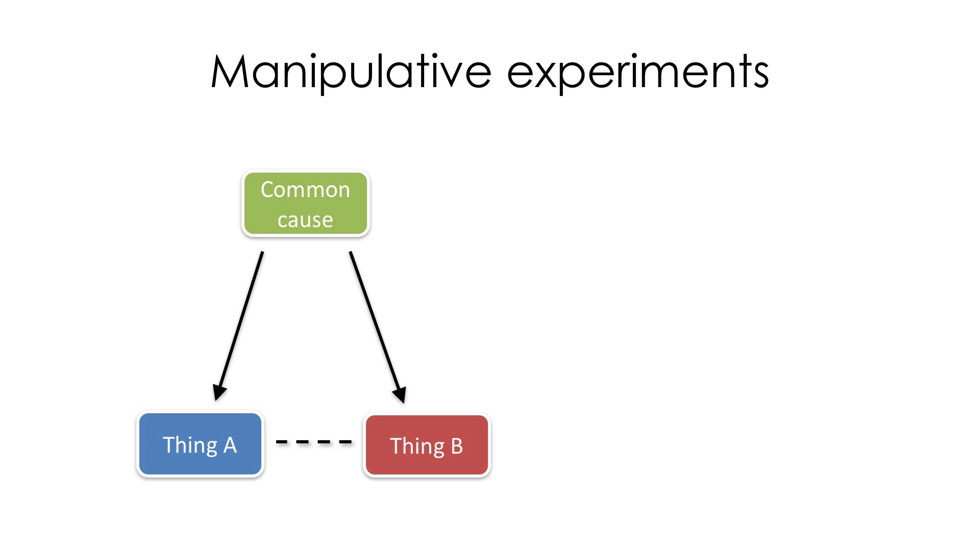So we go in and we try changing thing A and see what happens. Well, if there's common cause, then that should have no effect on thing B, right? Because there's no causal arrow from thing A to thing B.